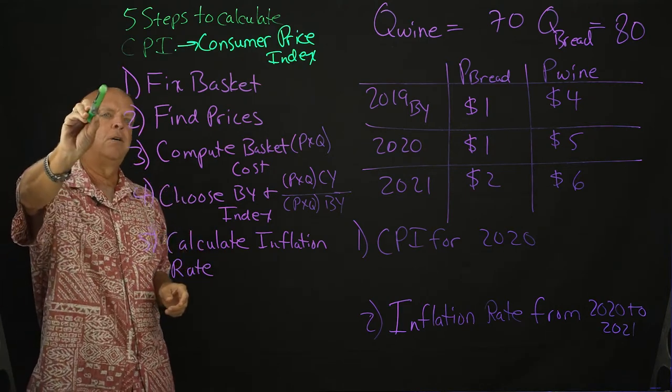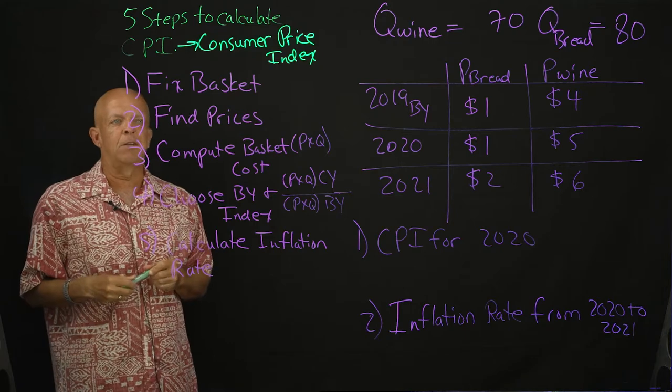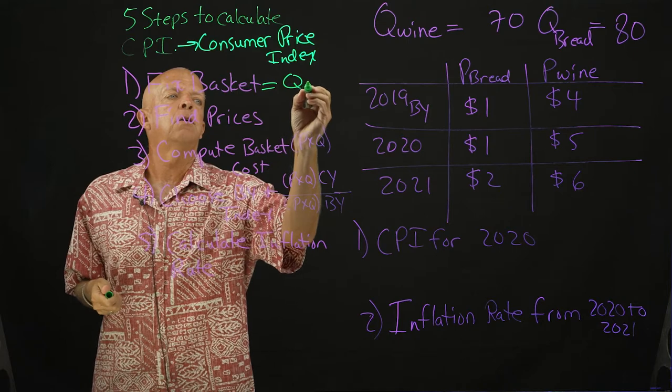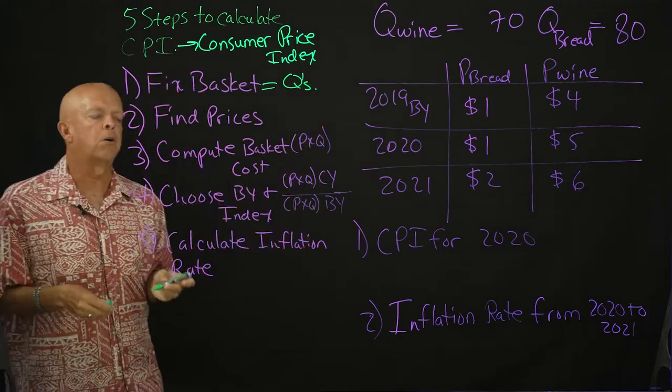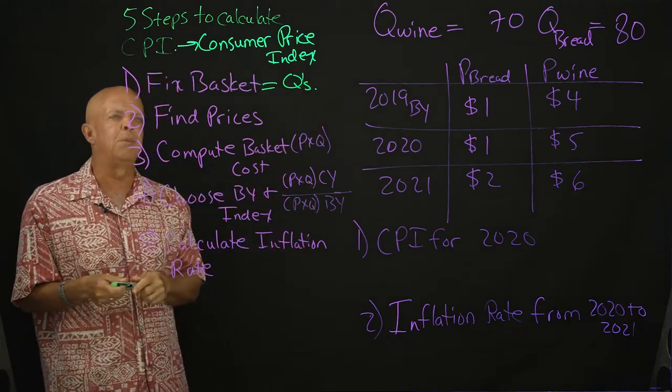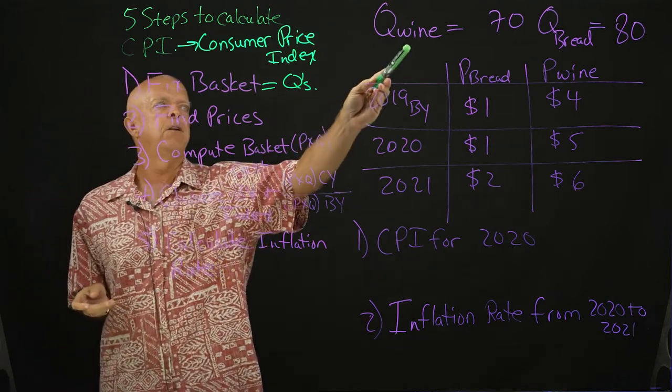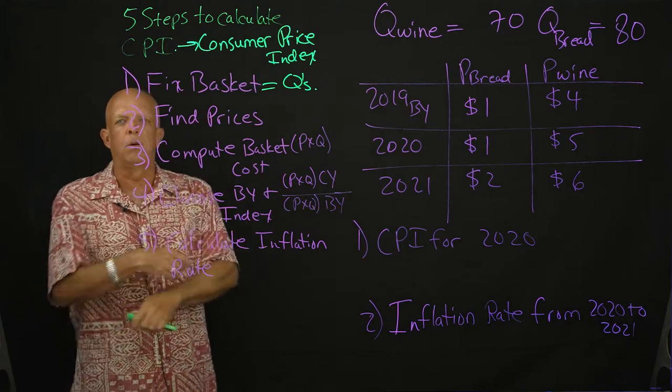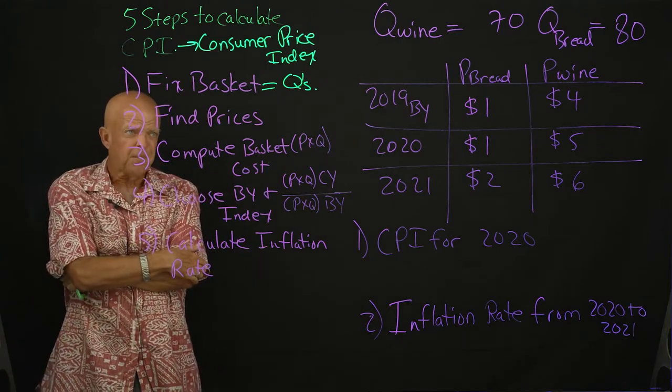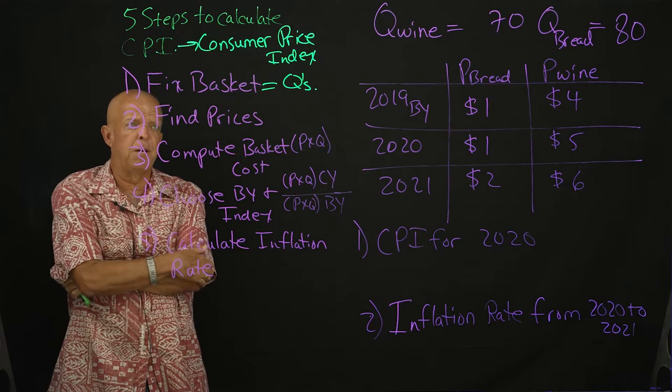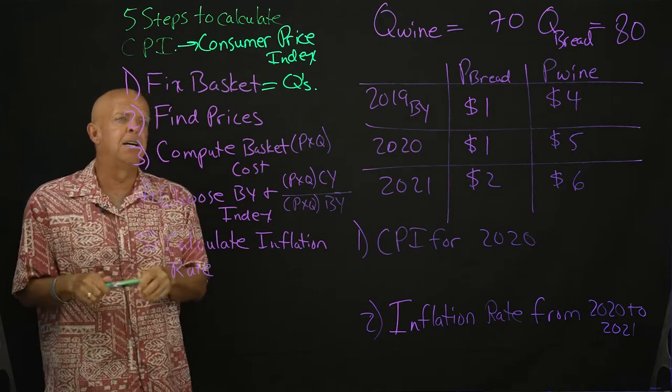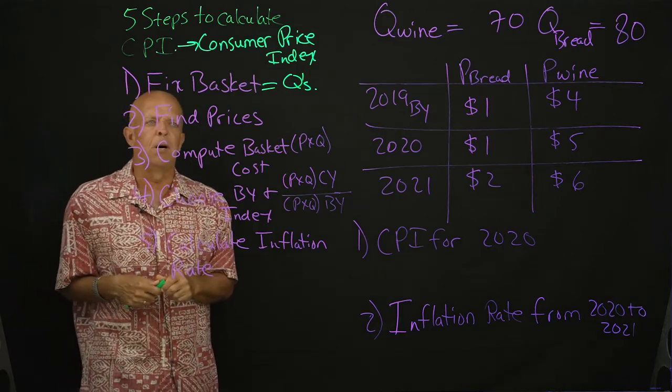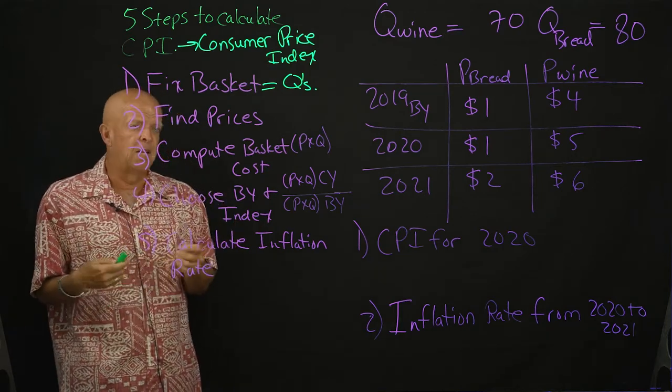Number one is something called fix the basket. Fix the basket means what are our Qs, what are our quantities? Now oftentimes these numbers will be given to you, so we have these numbers here: Q wine, Q bread. But in the real world, what people are looking for are the actual quantities that people are buying, and then we're finding the prices according to those items and of course the change.